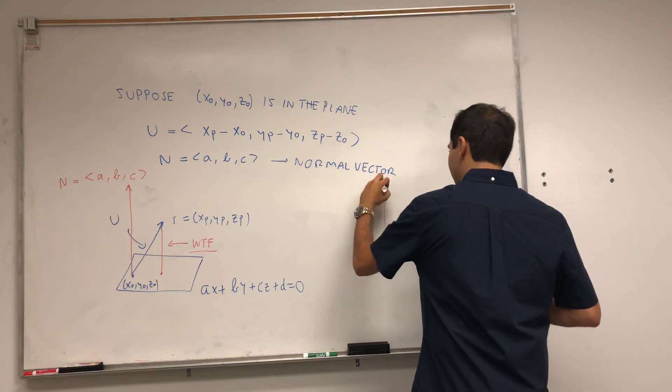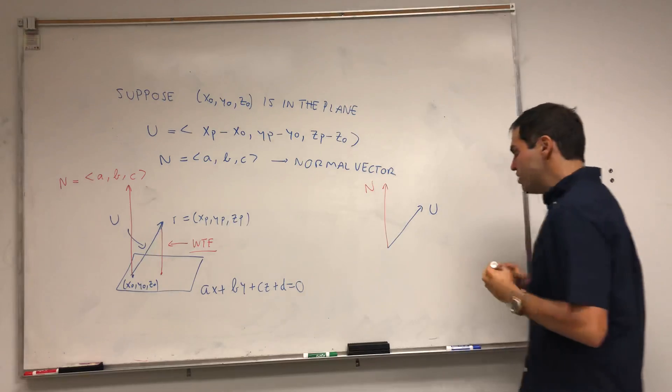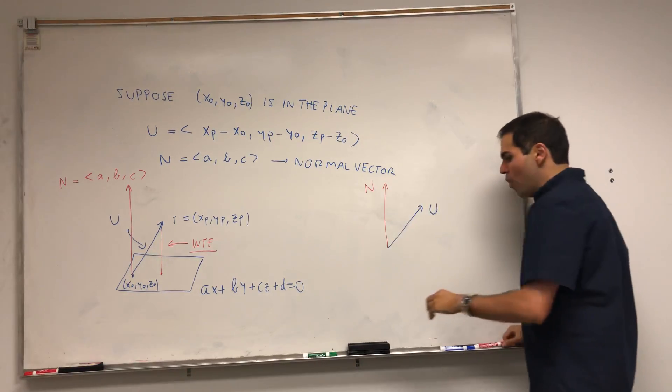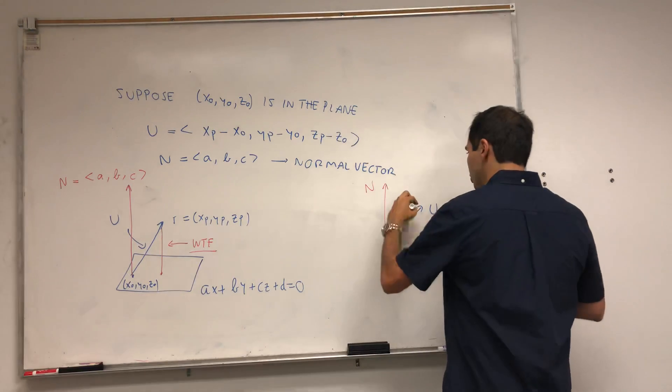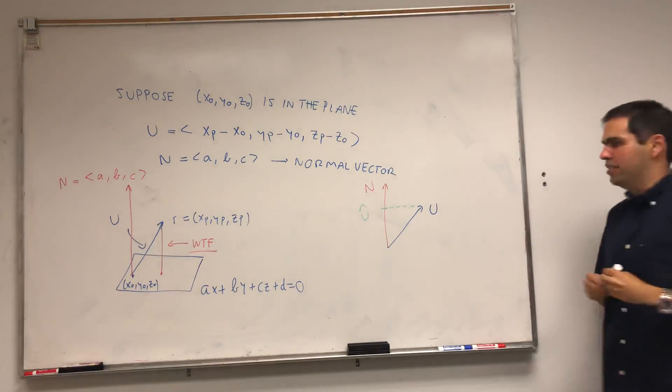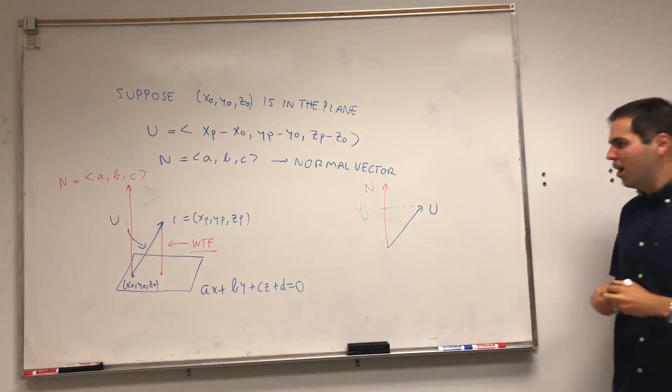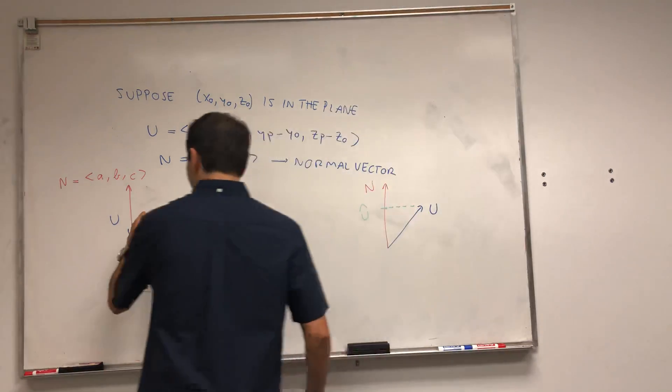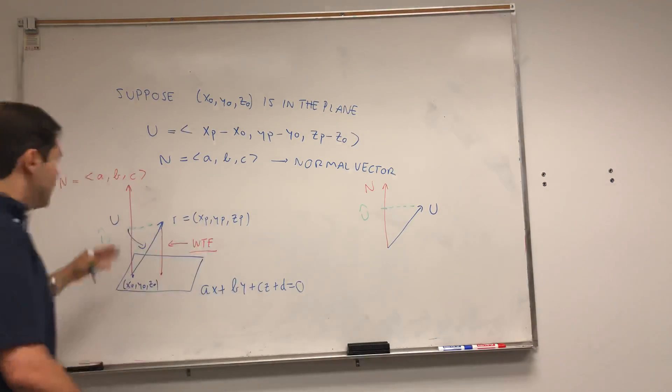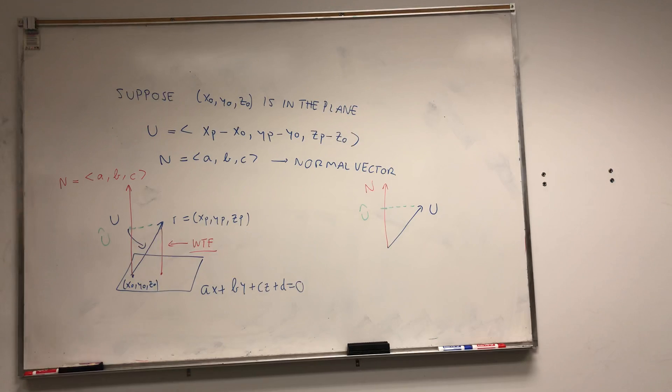What we really want to do, and that's the reason I drew it so big, is we want to project U onto this vector N. So let's calculate the projection of U onto this normal vector N.